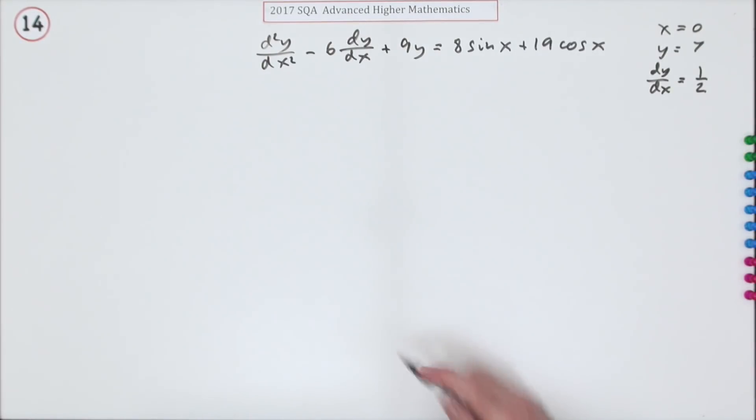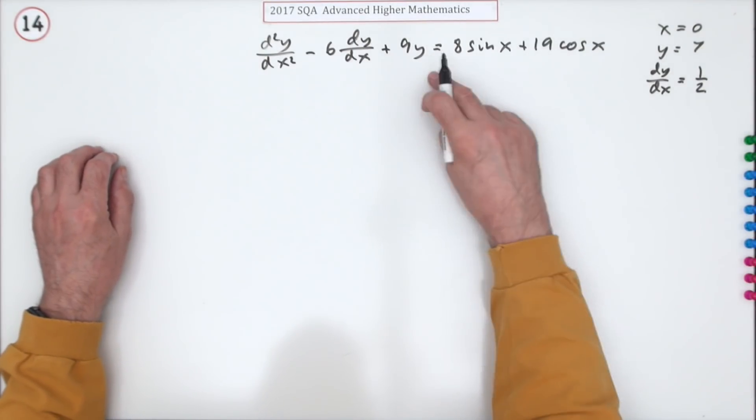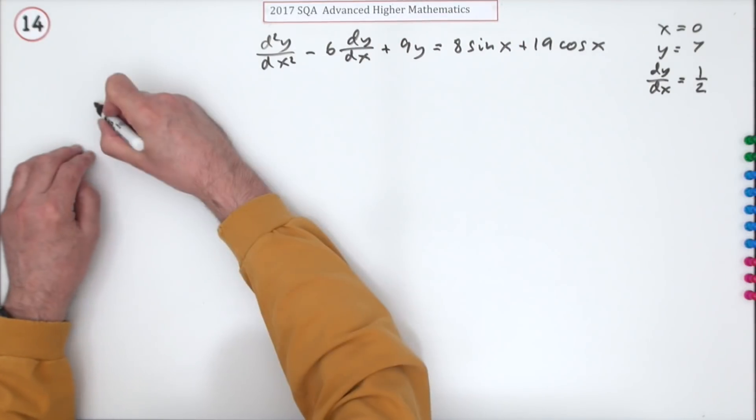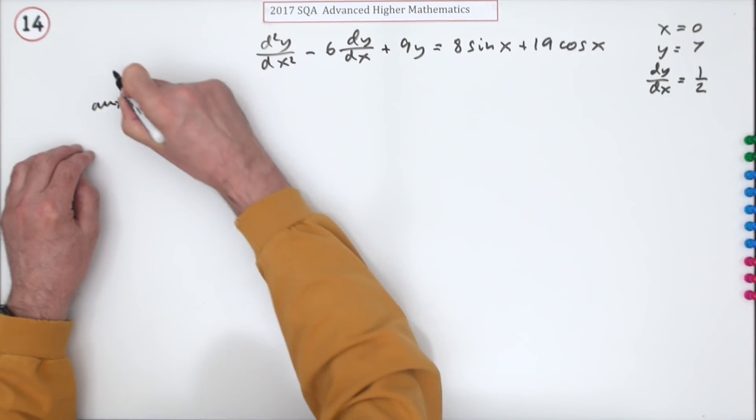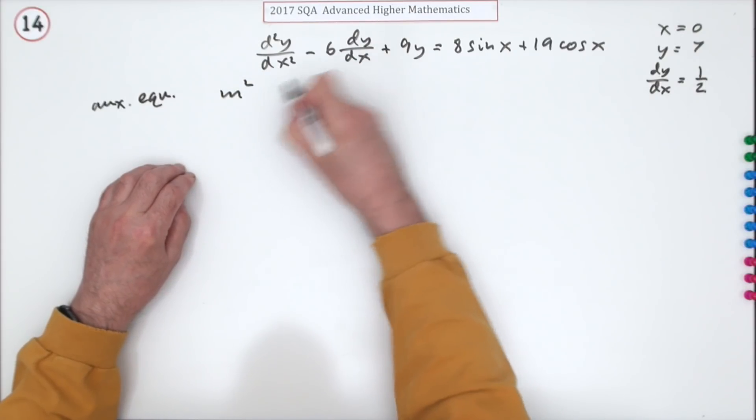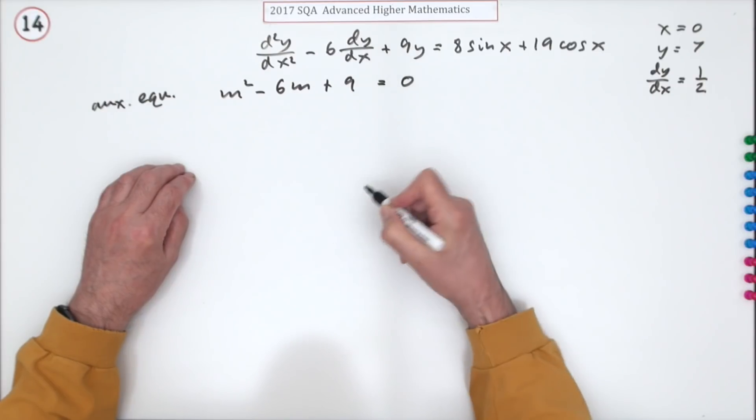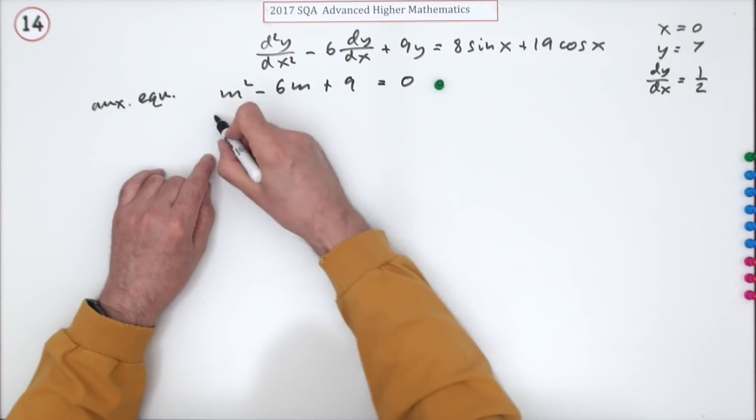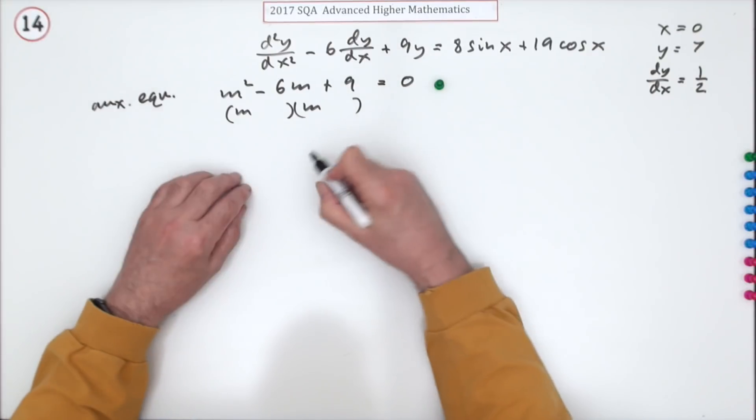Kicking it off with the complementary function: what would be the solution of this if it were just equal to zero? For that you construct the auxiliary equation, and that would be m squared minus 6m plus 9 equals 0. Doing that gets the first mark.